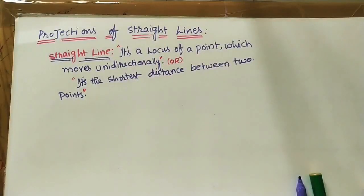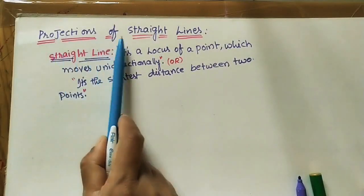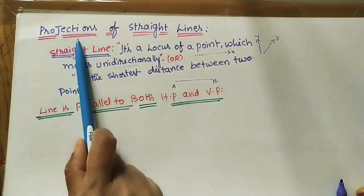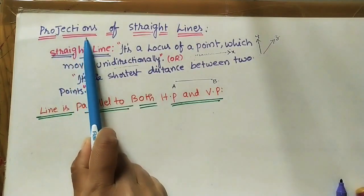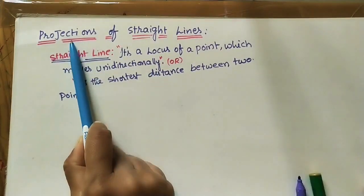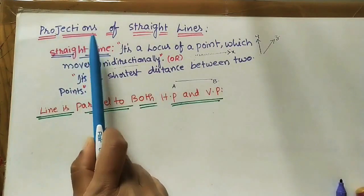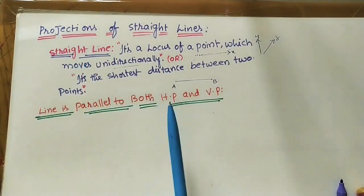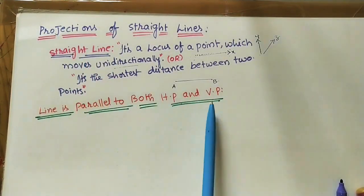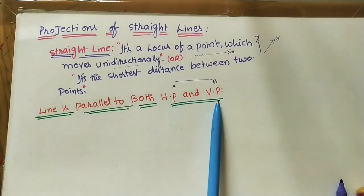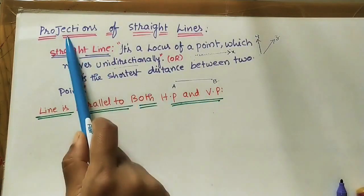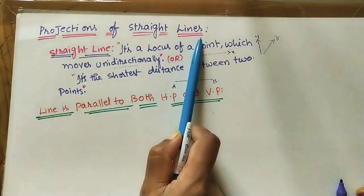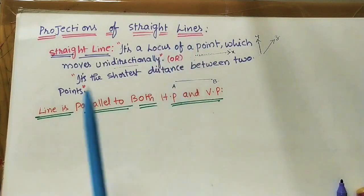Welcome to this channel. Let us discuss how to draw projections of a straight line. Projection means image or drawing. We are taking the front view and top view of the line. In engineering drawing, we use two planes: the horizontal plane (HP) and the vertical plane (VP), and in these planes we do the drawing of the straight line.